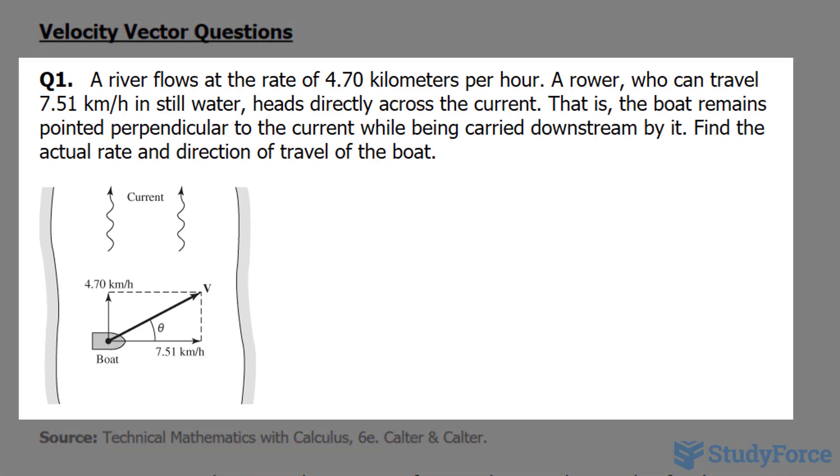Let's start with question number 1. The question reads: a river flows at a rate of 4.70 km per hour. A rower who can travel 7.51 km per hour in still water heads directly across the current.